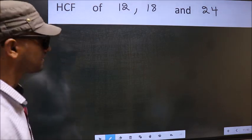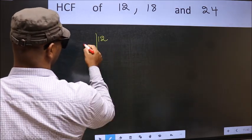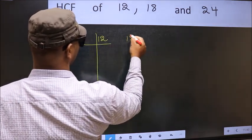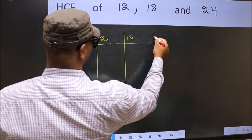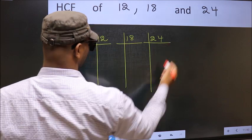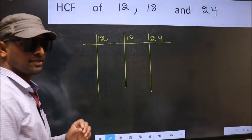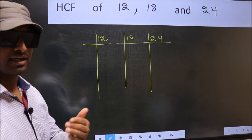What I mean is 12, 18, 24. This is your step 1. Next.